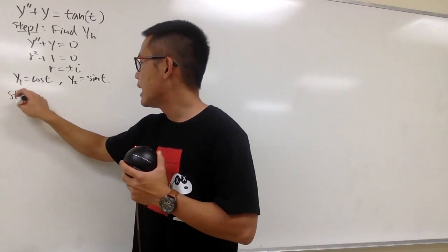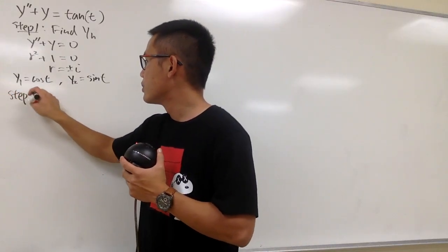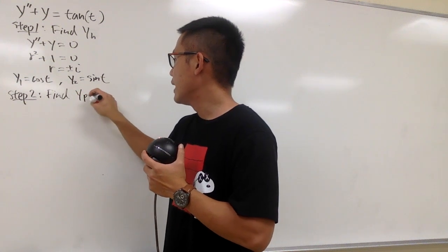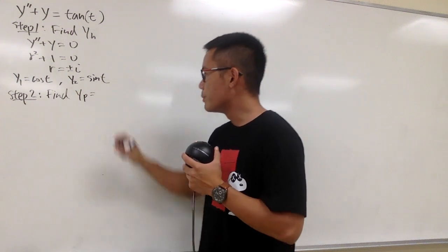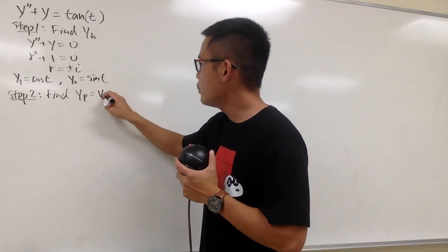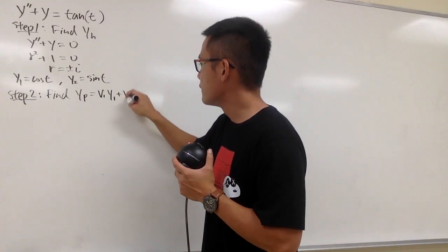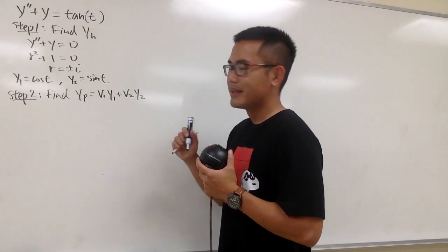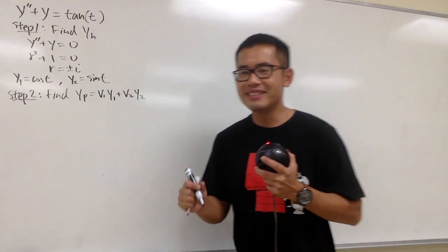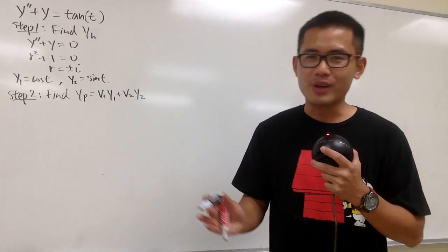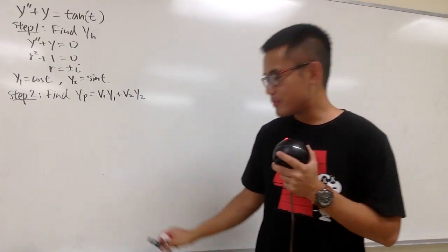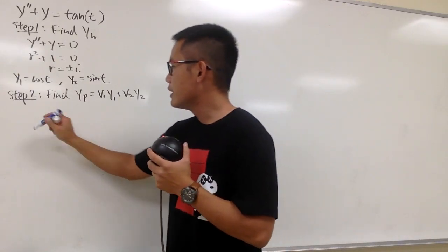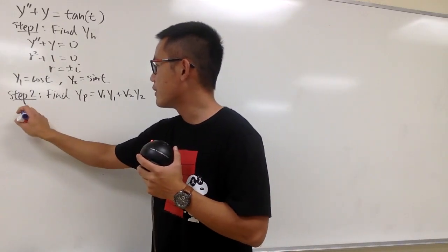Step 2 is to find yp. We know yp is going to be v1·y1 plus v2·y2. Here is the most important part from the previous video: we have to remember that system of equations.